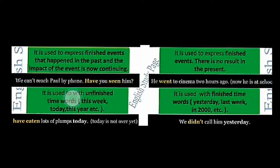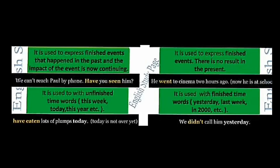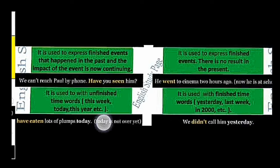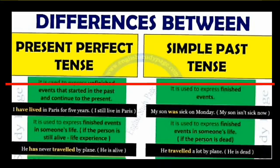अगर वो कल का बात हो गया, तो हम लोग वहाँ पर V2 लगाएंगे, past हो गया। जैसे कि 'We didn't call him yesterday.' — हम लोगों ने उसे कल call नहीं किया था। तो यहाँ पर कल का बात आ गया, तो वो बीत चुका है, इसलिए Simple Past tense का use करेंगे।